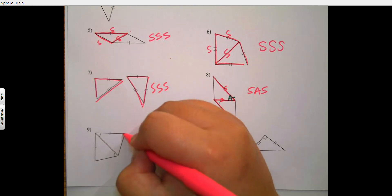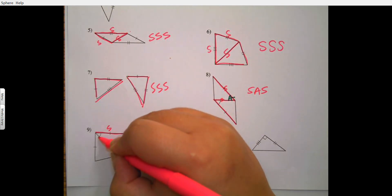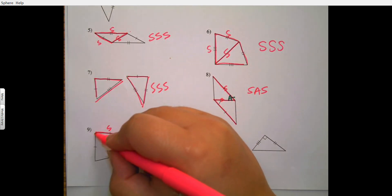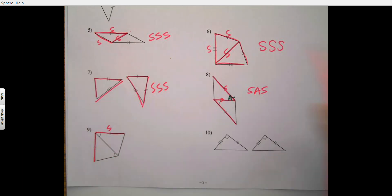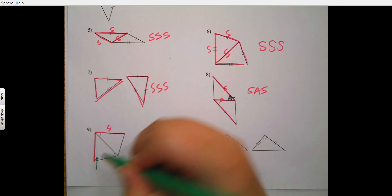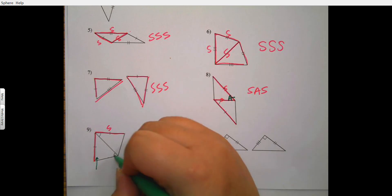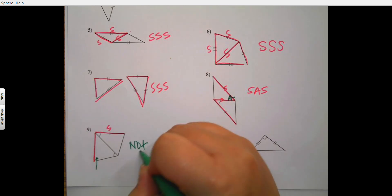Moving to number nine: I see side, side, and angle — but I'm missing my angle. It's not there where it should be; it's over on the other side. So these are not congruent.